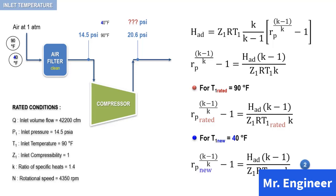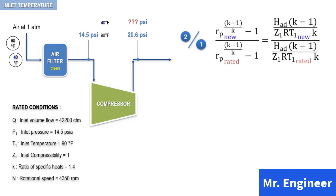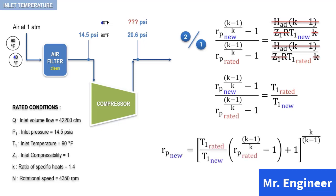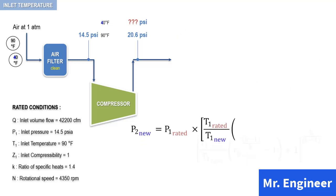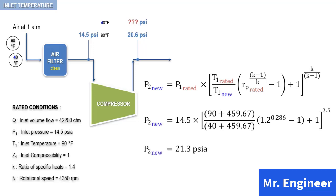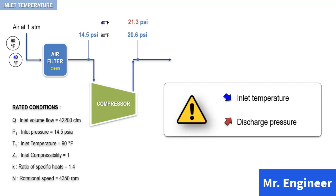For a change in inlet temperature only, we can write the following for the rated inlet temperature and for the new inlet temperature. Dividing the second equation by the first will yield the following. Rearranging this expression gives the following useful relationship. Solving for the new pressure ratio, and since the new pressure ratio is equal to P2, the unknown new discharge pressure, divided by P1, which is unchanged, the new discharge pressure can be expressed accordingly. Substituting for the known values gives the new discharge pressure.